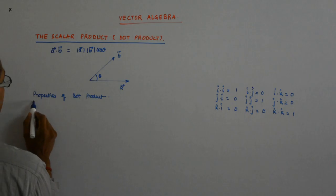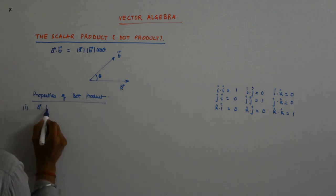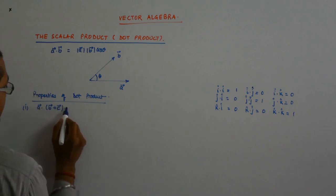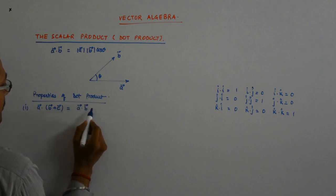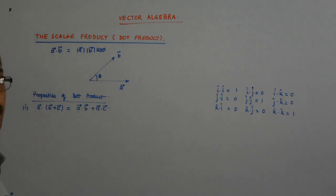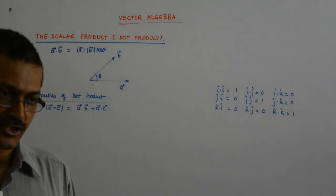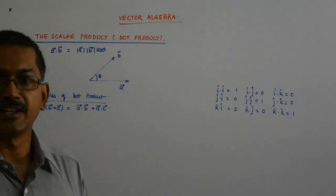One of them is the distributive property. That is, if a is dotted with b plus c, it gives us actually a dot b plus a dot c. So what do we say? We say that the multiplication, the dot multiplication, distributes over the addition.